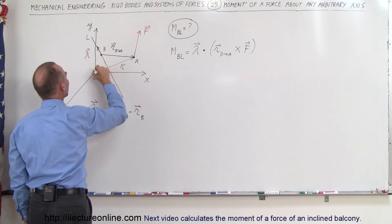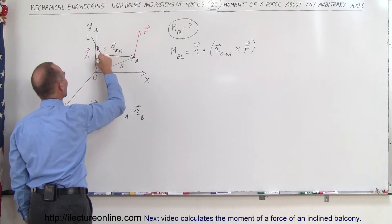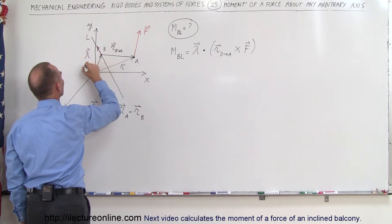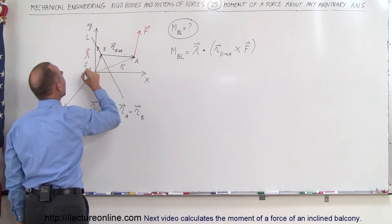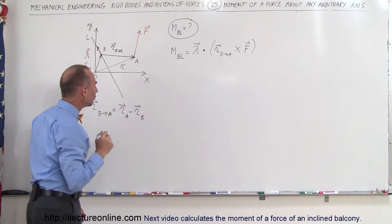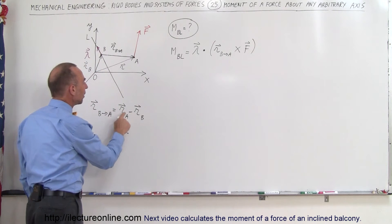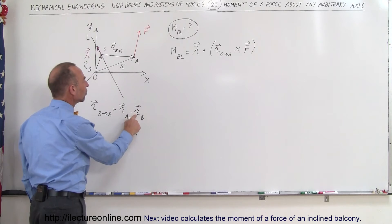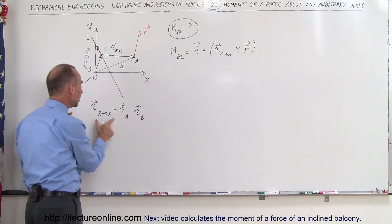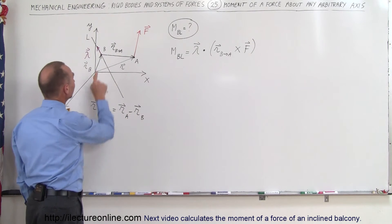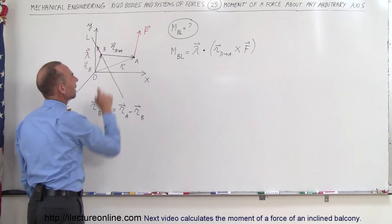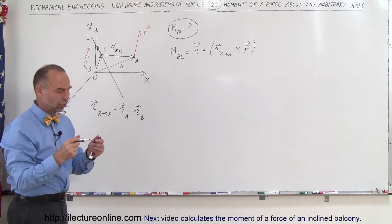We draw a position vector from the origin to B, which is R_B. Notice that R_A minus R_B should equal the vector from B to A. Let's verify that this is correct.